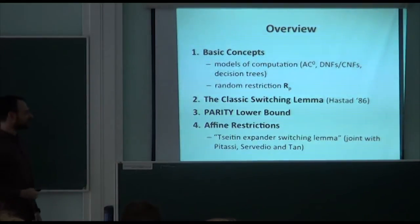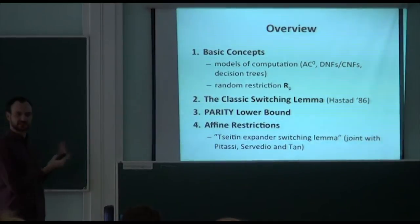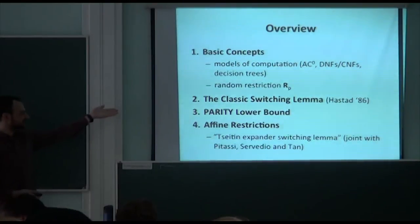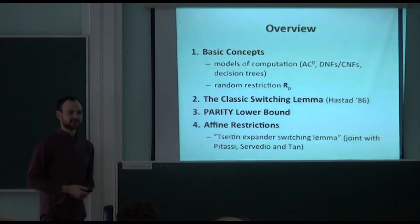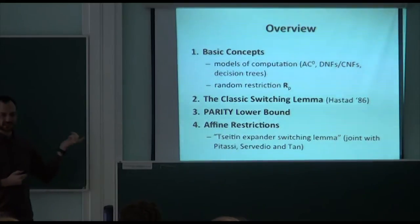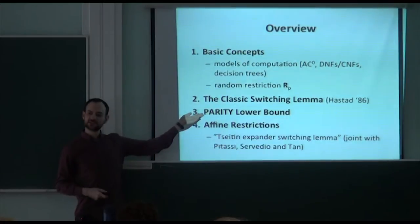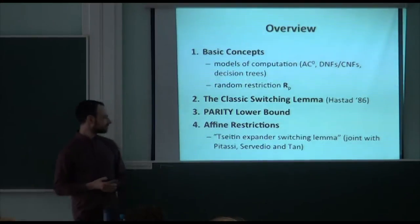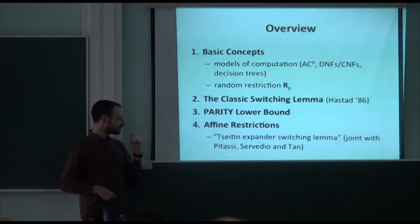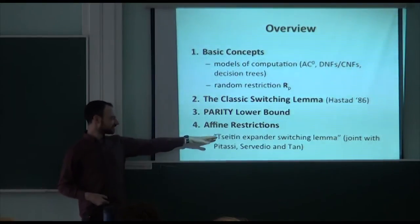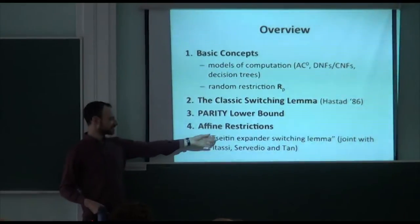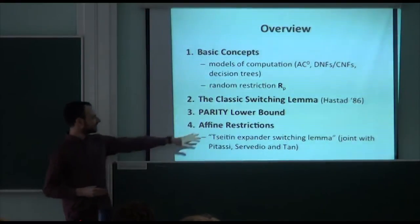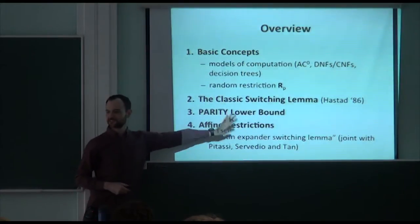Here's the outline of the talk, which will be in two parts. The first part covers the basic concepts: AC0 circuits, DNFs and CNFs, decision trees, and random restrictions. Then I'll present the classic switching lemma of Håstad, including a proof, and show how it is used to prove lower bounds for the parity function. In the second part, I'll discuss new joint work with Tony Pitassi, Rocco Servedio, and Li-Yang Tan. The main result is a switching lemma for the Tseitin tautologies on expander graphs, presented more generally in terms of a switching lemma for affine subset restrictions.